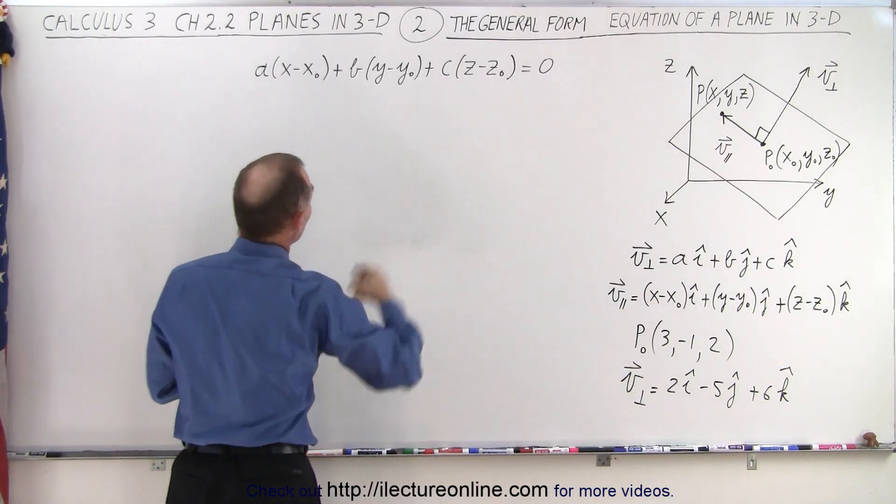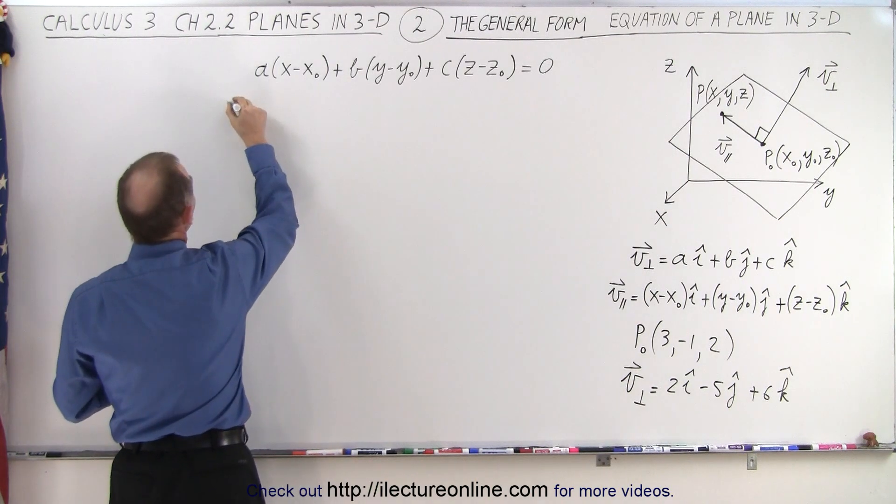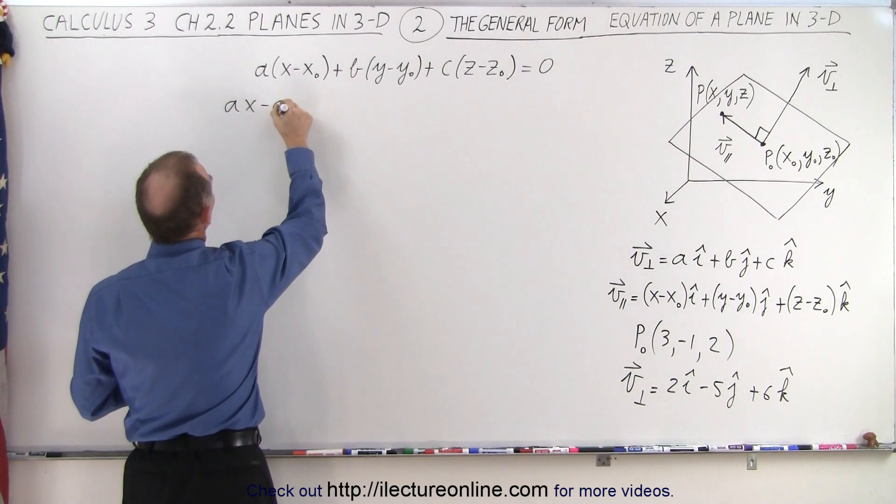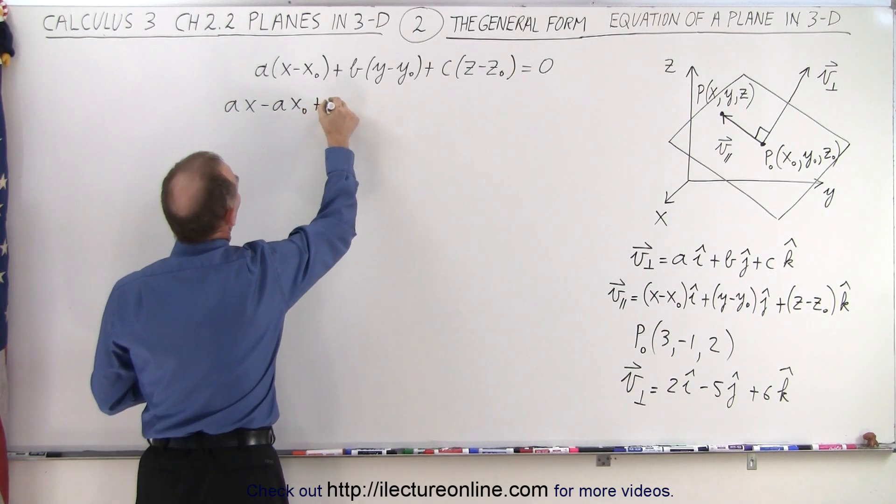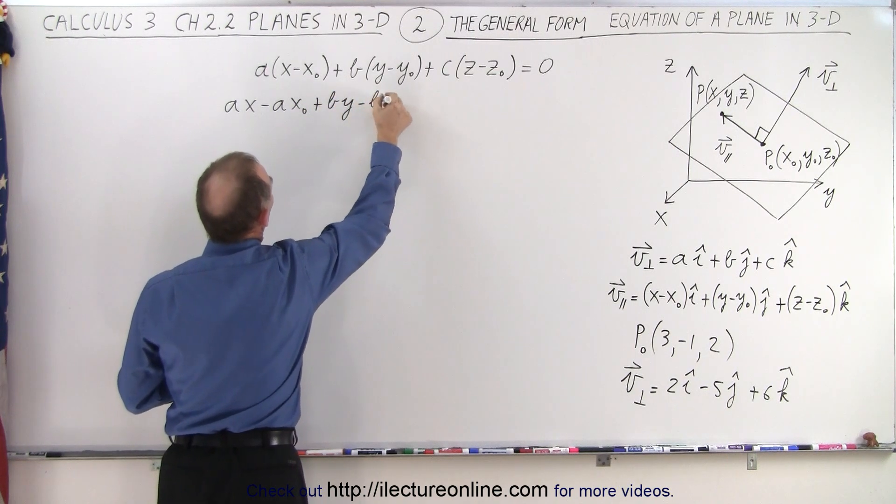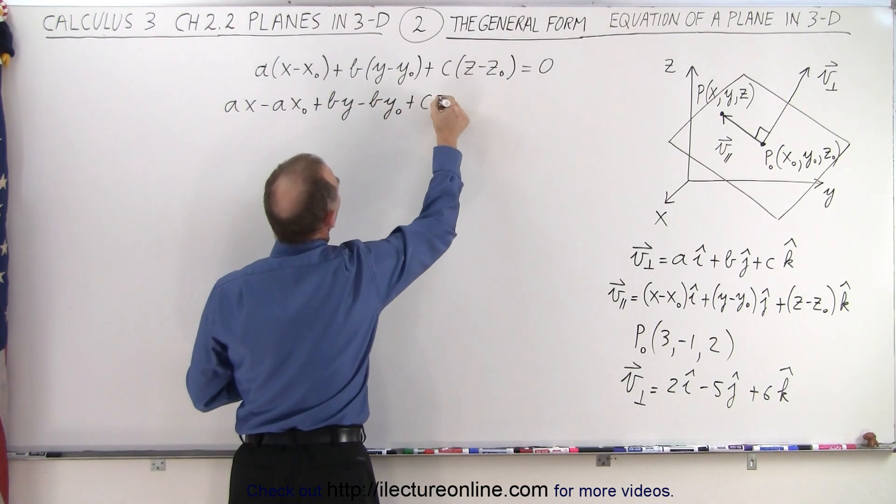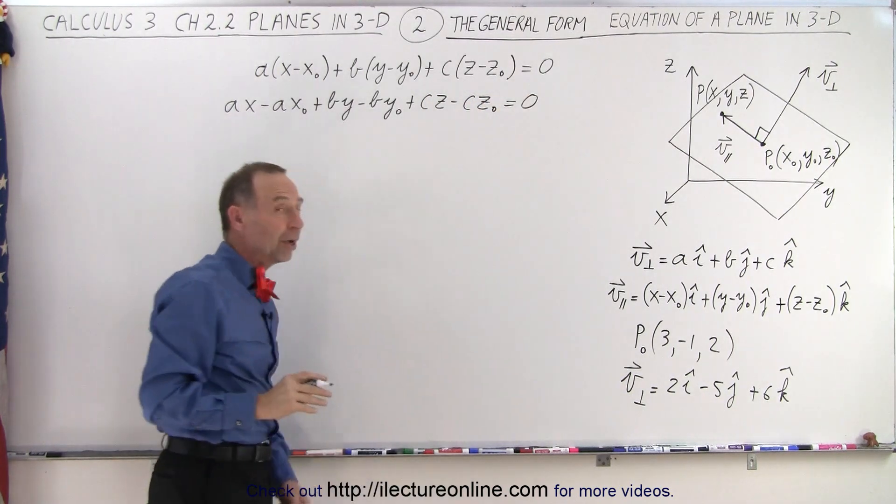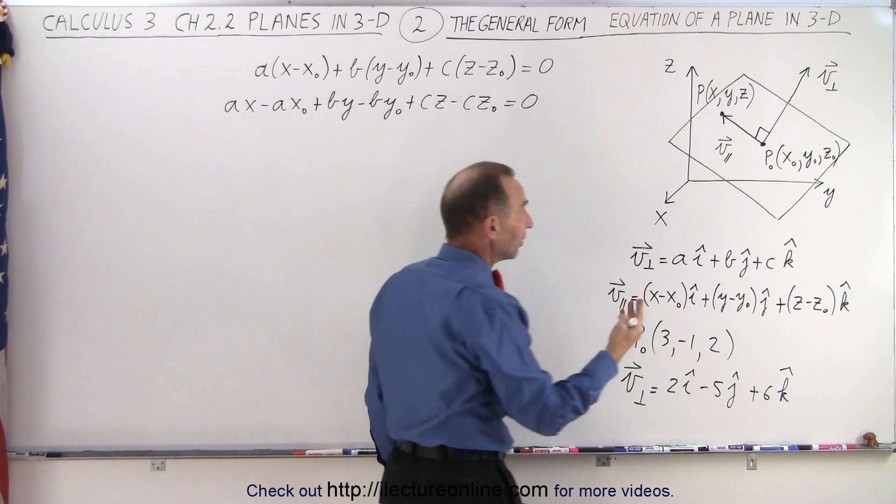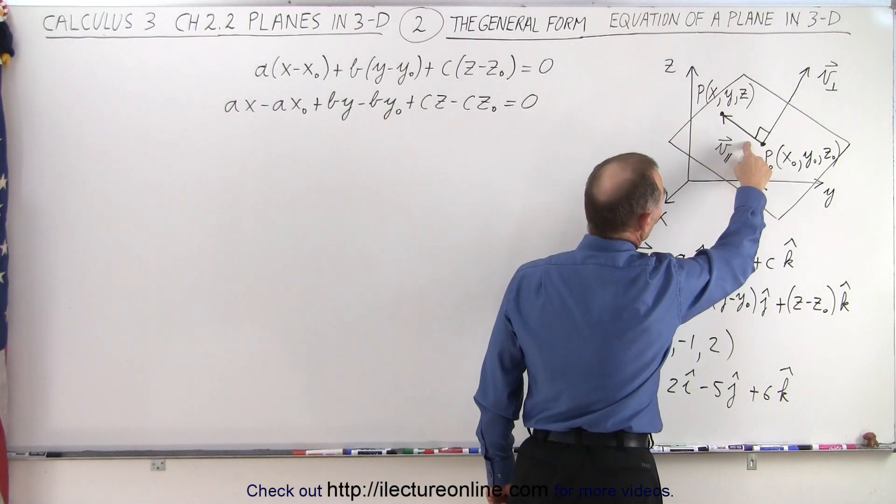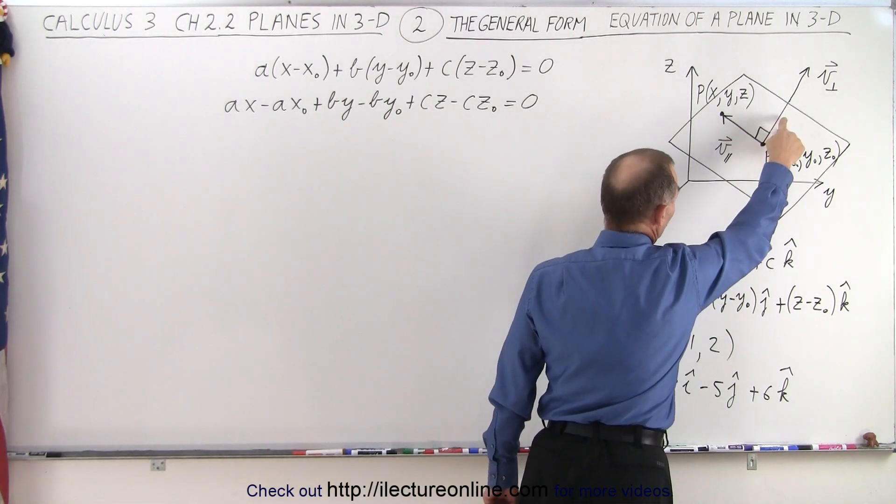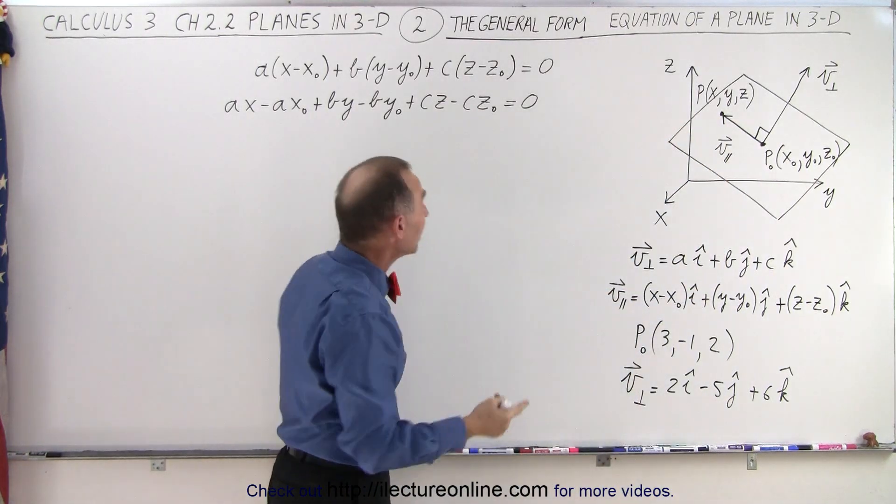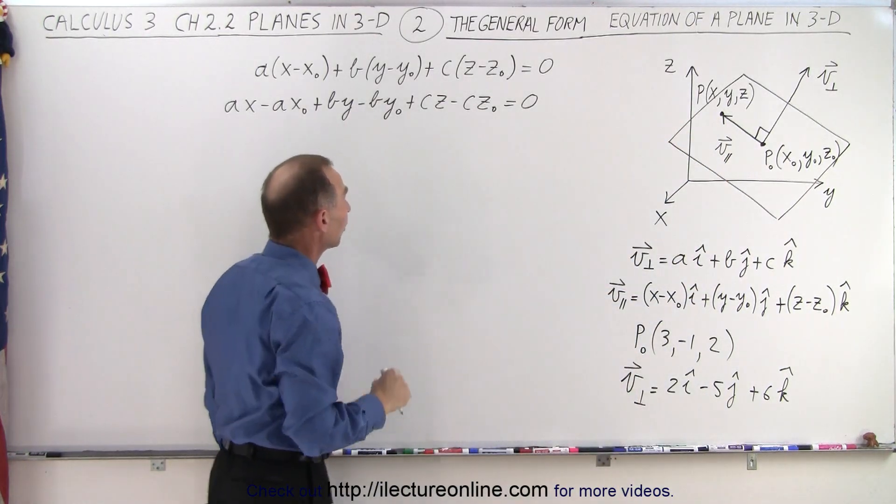The way that's done is we're first going to multiply everything out. So we end up with Ax minus Ax sub-naught plus By minus By sub-naught plus Cz minus Cz sub-naught. And that's equal to zero because when we multiply via the dot product, the vector which is parallel to the plane and the vector which is normal to the plane, the angle is 90 degrees, so the dot product must equal zero.